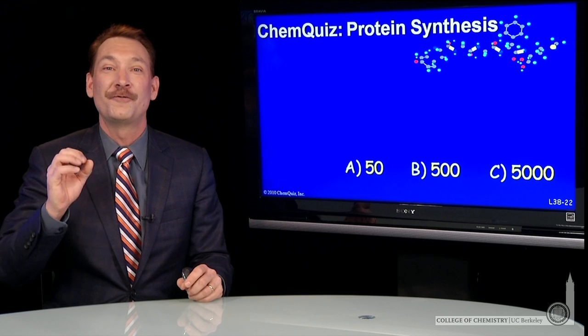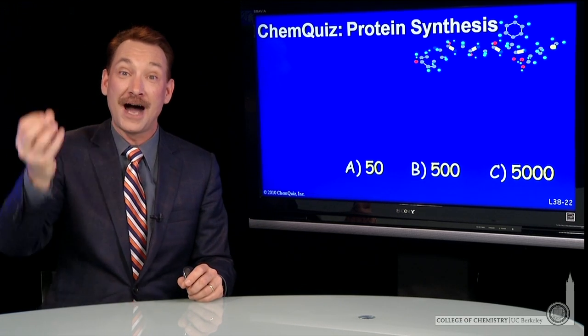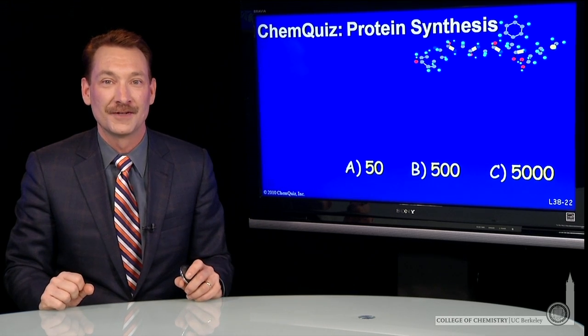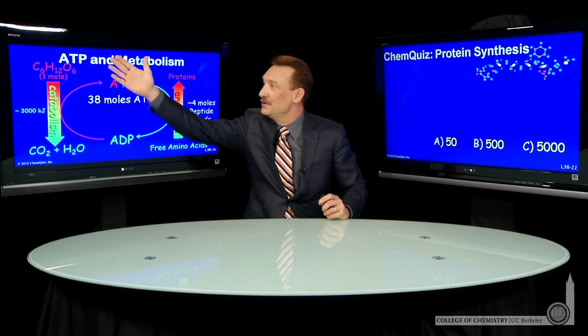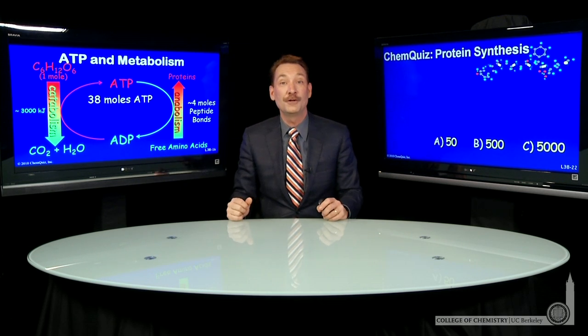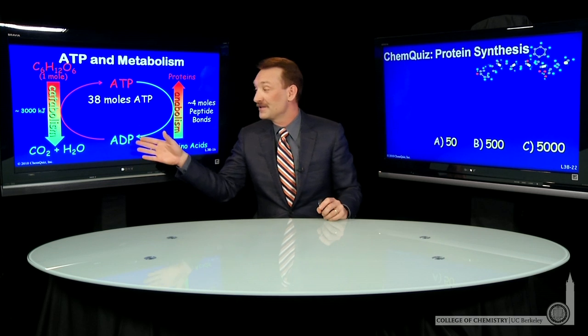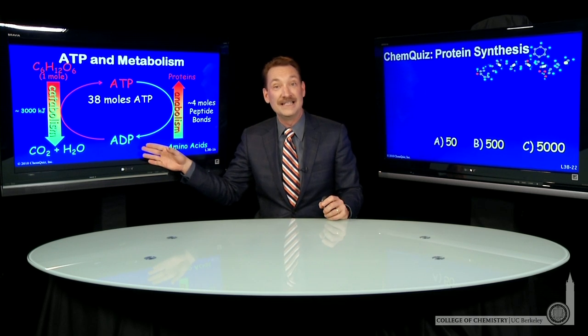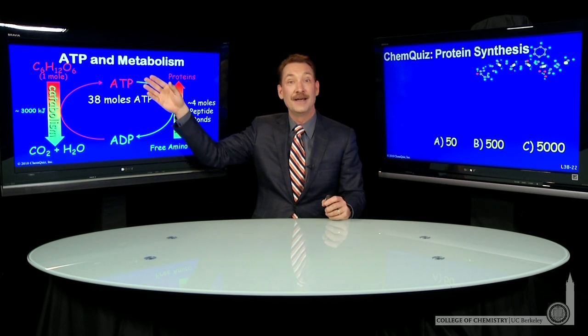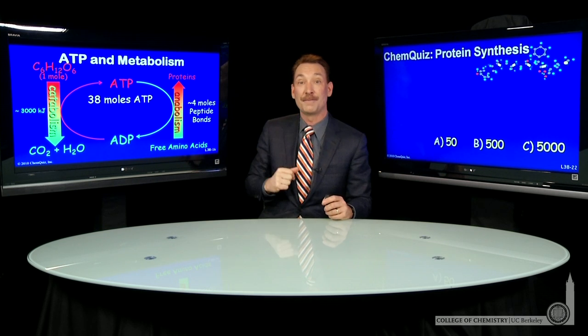We're talking about forming peptide bonds as we oxidize glucose. So when you oxidize a mole of glucose, about 3,000 kilojoules per mole is released. That's transferred via the conversion of ADP to ATP to the formation of peptide bonds.